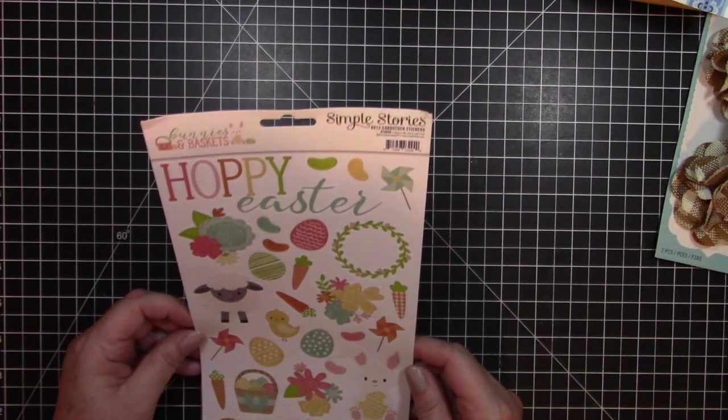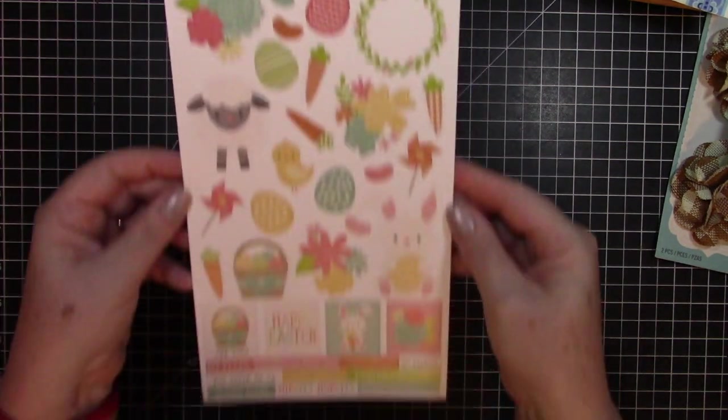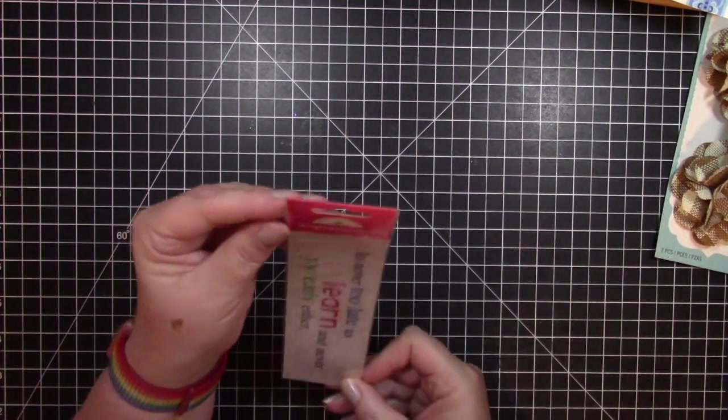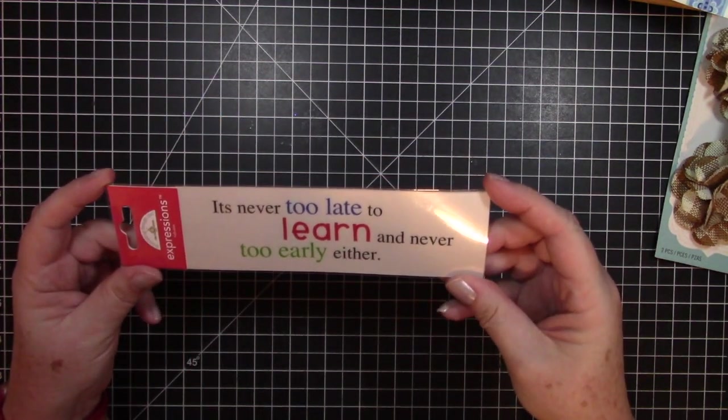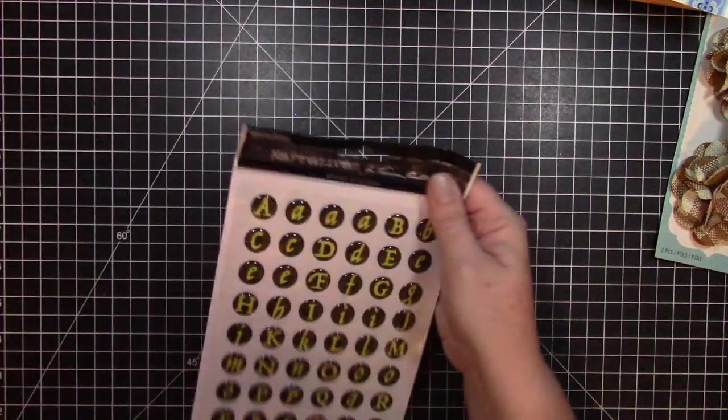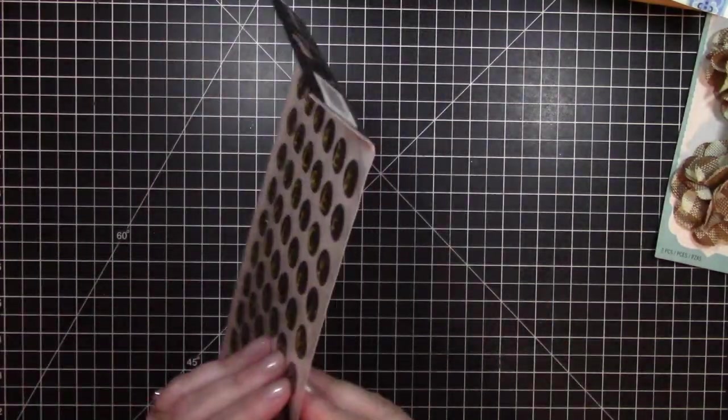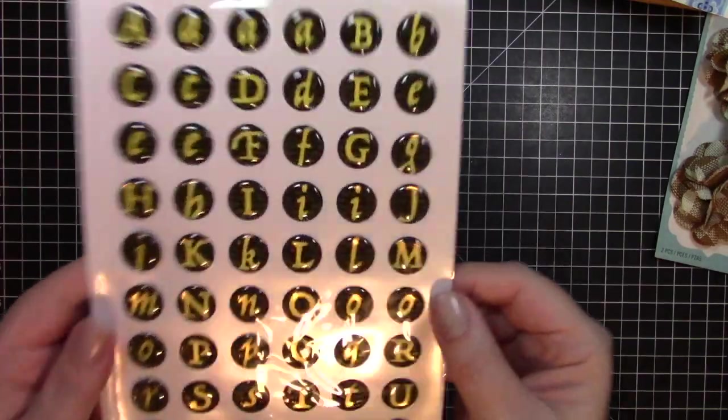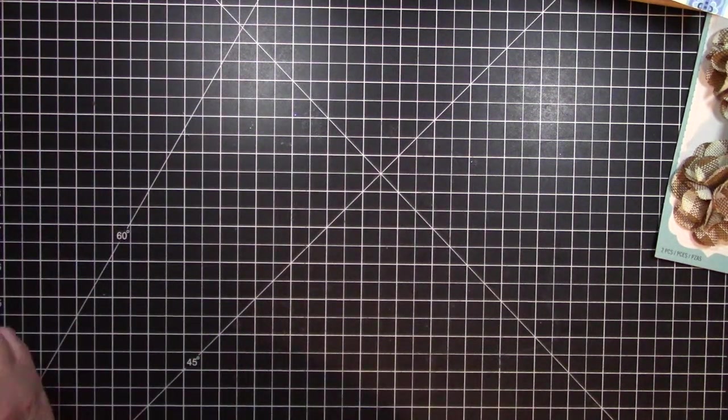This is really cool. This reminds me of Echo Park. It is Simple Stories, but I think it would go good with all of the Echo Park papers I have. Hoppy Easter. Then we have Doodlebug Design. It's never too late to learn and never too early either. Cool little sentiment. Narratives. These are really cool alphabets. They are like a dome almost, 3D. Very shimmery. Very cool. Not your plain letters, that's for sure.